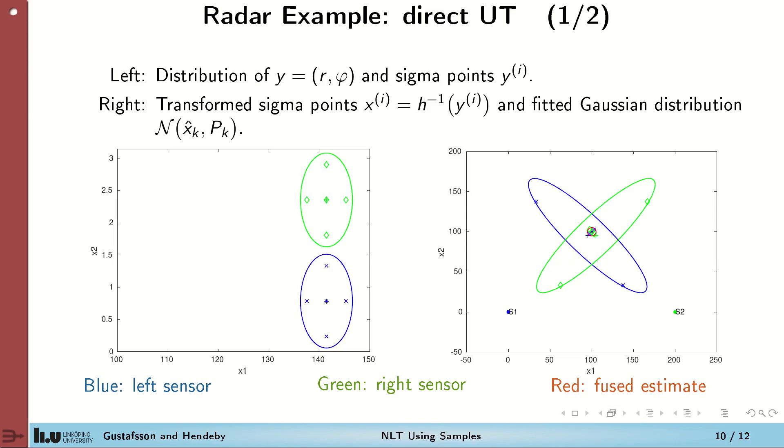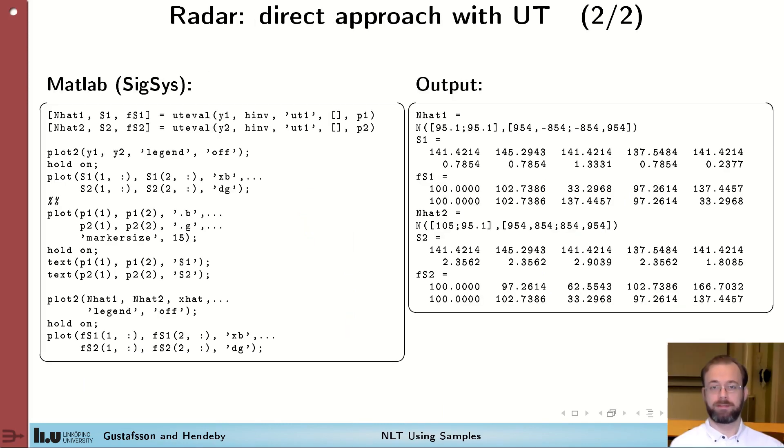Now let's look at the application of the unscented transform to the radar application. To the left here, we have the range bearing domain with the measurement from the left and right sensor respectively. We see how the sigma points are used to indicate or span the covariance ellipsoids. And we also see the sigma points after the transformation to the Cartesian space and how we now use these points to compute covariance ellipsoids. And this is the matching MATLAB code used in SIGSUS to do this. Again, note that there's not that many lines of code needed to do the actual transformations, but that there's a few more lines of code necessary to illustrate the results. I strongly encourage you to play around with MATLAB and these methods to see how they actually work. That gives you a lot of insights that are valuable.